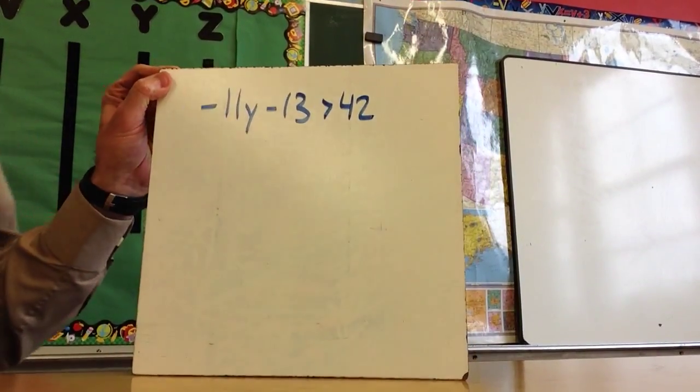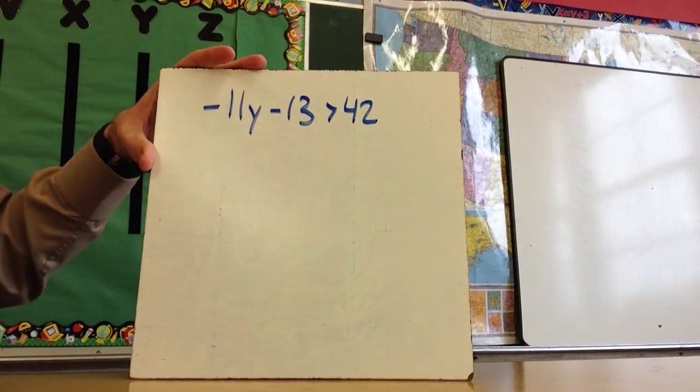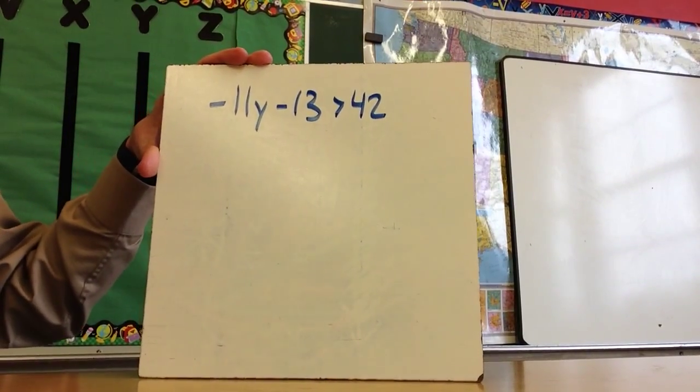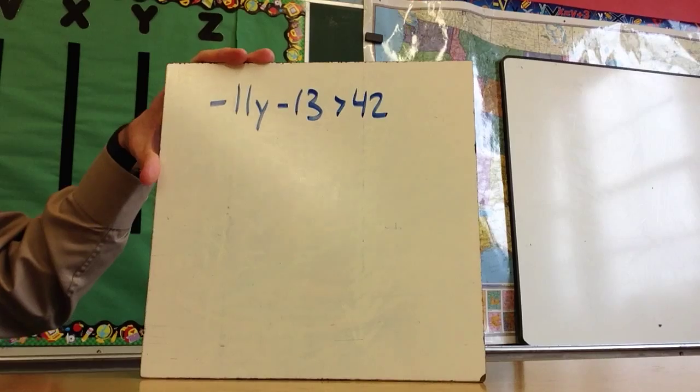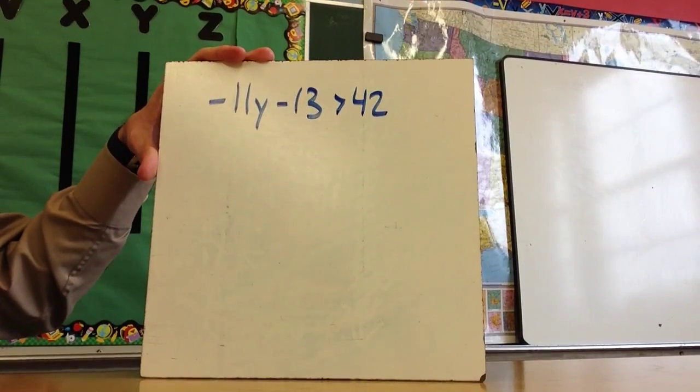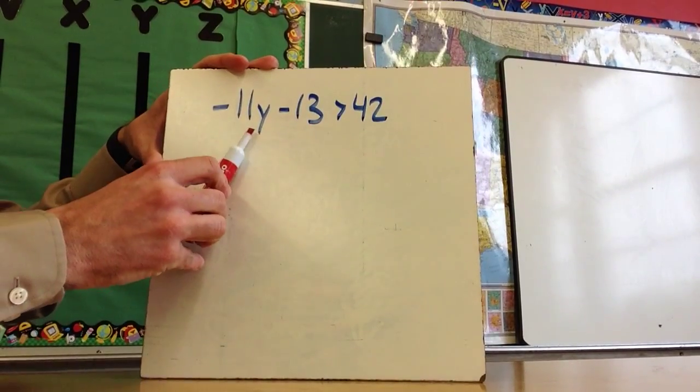The first problem we're going to work on looks like this. Keep in mind that we're focusing on when we should and should not flip the sign. The goal is to isolate the variable, so I want to get the y by itself.